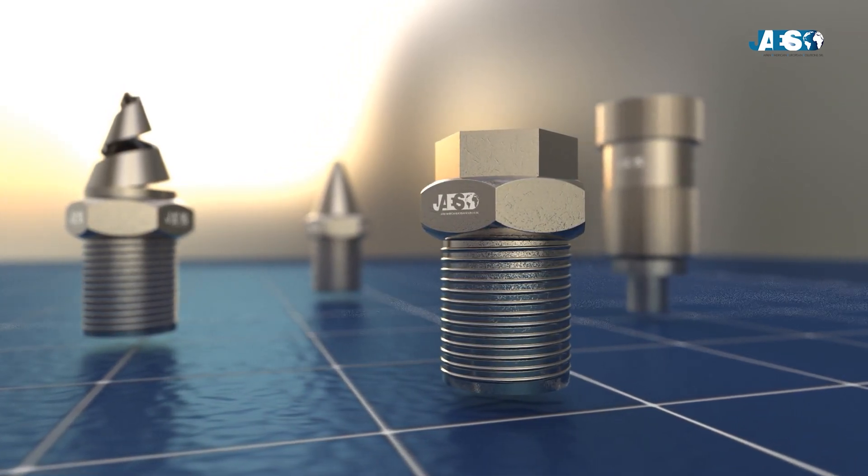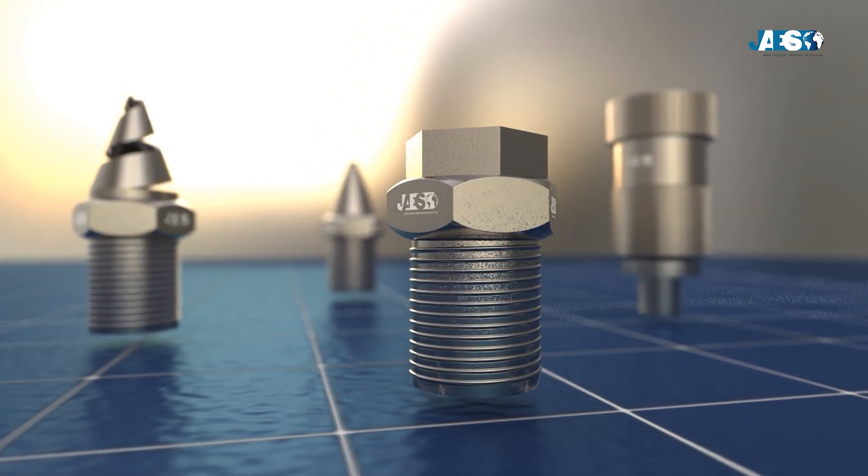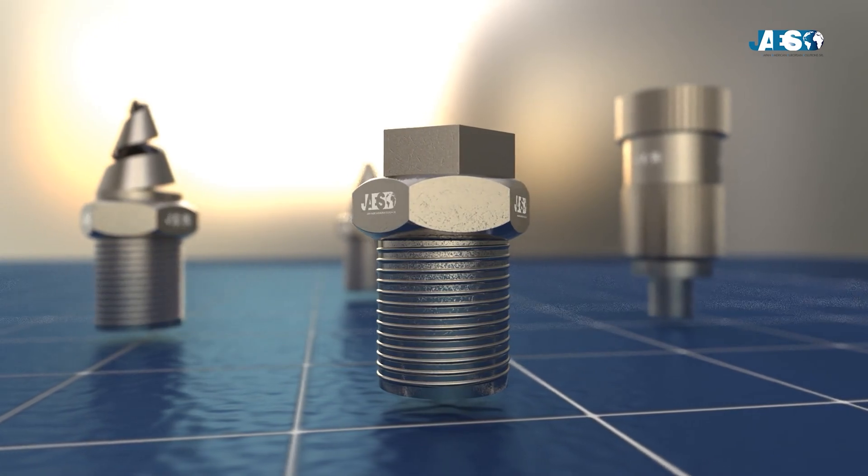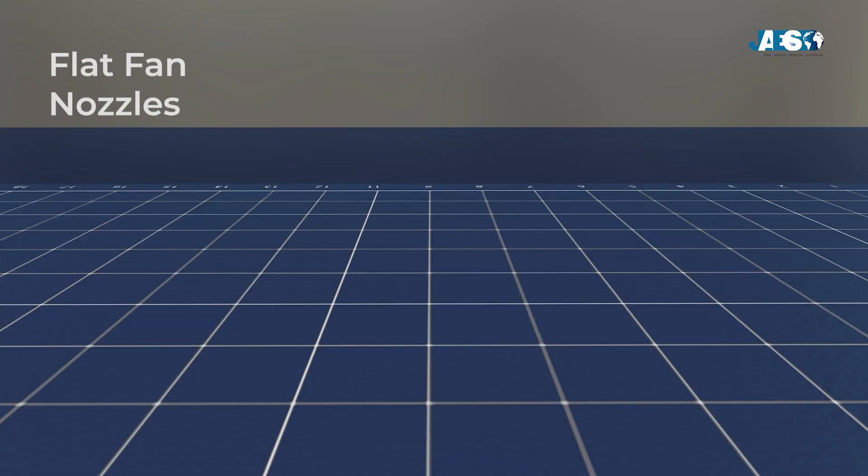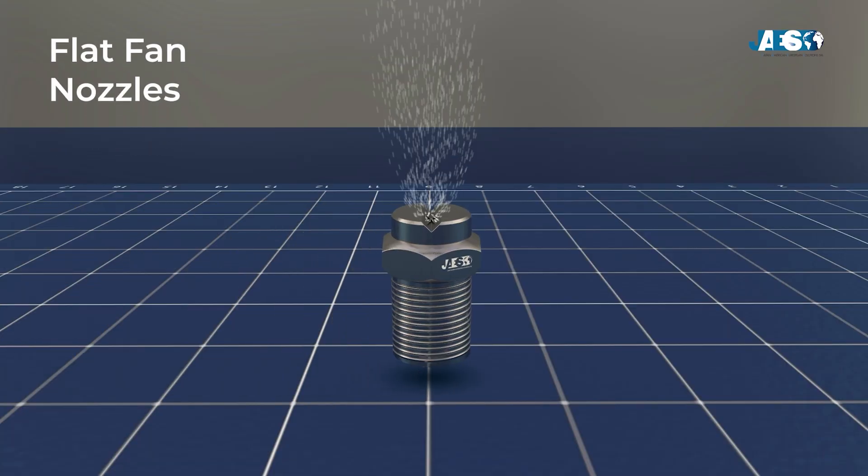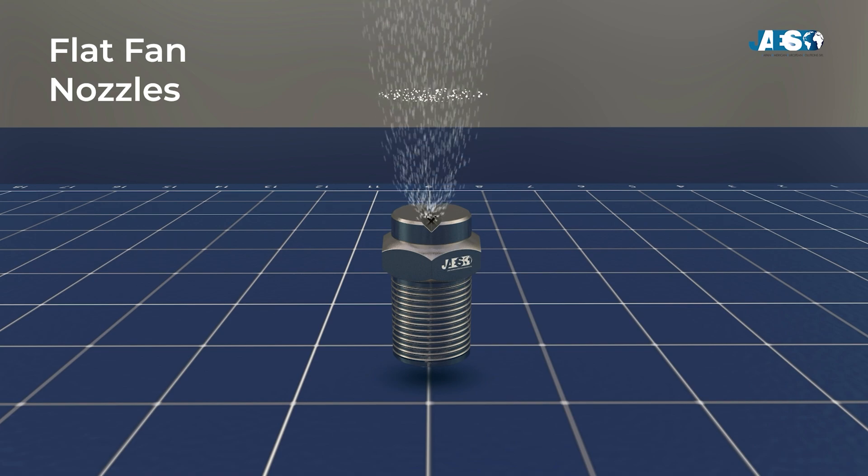Nozzles differ mainly according to the shape of the jet and the spray mechanism. Let's look at some types. Flat fan nozzles have a blade or a fan shaped spray and are used in cleaning and spray painting.